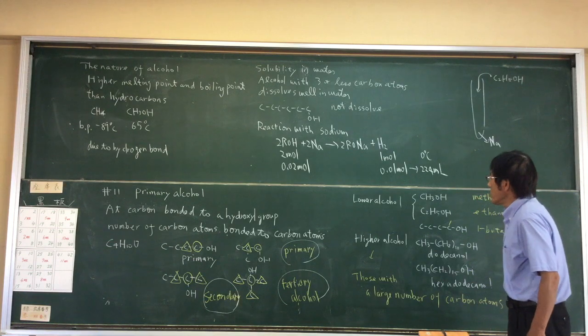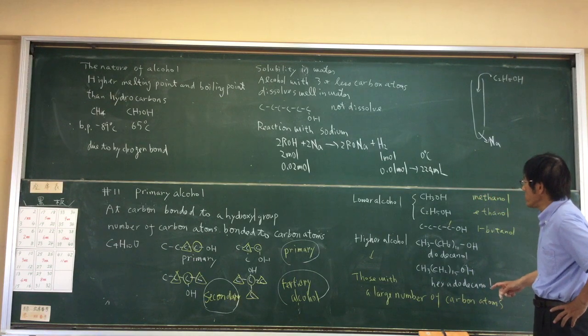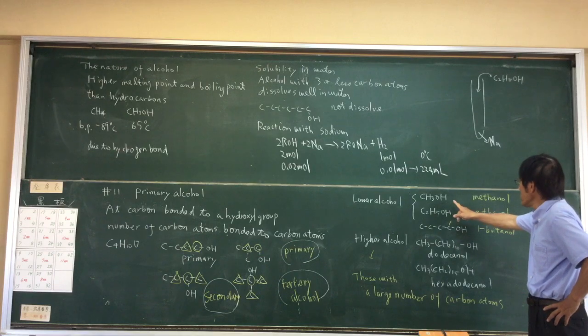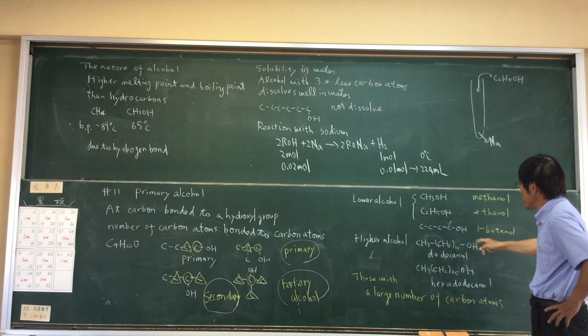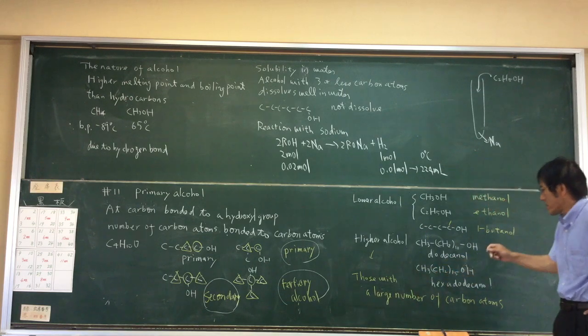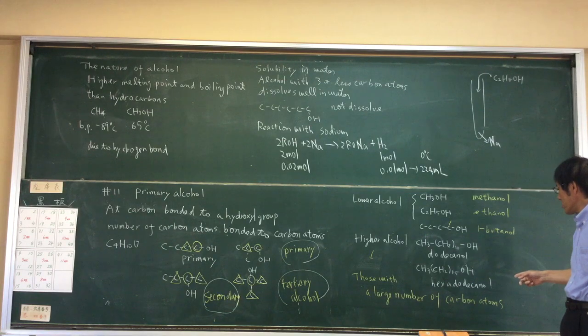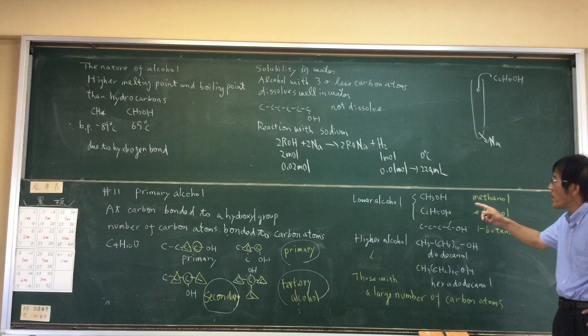Next, lower alcohols. For example, methanol, ethanol, 1-butanol - those with a small number of carbon atoms, we call lower alcohol.